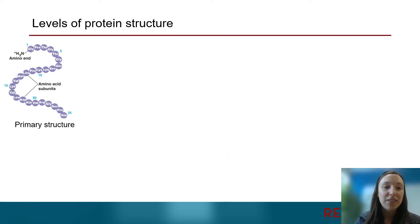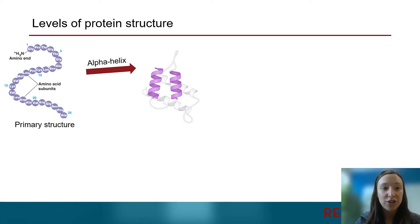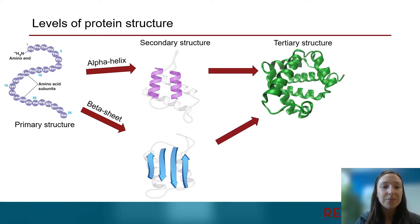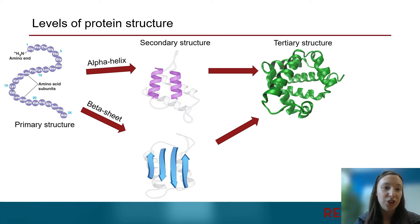There are four different levels of protein structure. Primary structure is the string of amino acids that's called the polypeptide chain. This string of amino acids can fold into helical structures called alpha helices or sheet structures called beta sheets. This level of structure is called secondary structure. The 3D arrangement of alpha helices and beta sheets is called tertiary structure, and it's important to note that tertiary structure is made up of only one polypeptide chain.